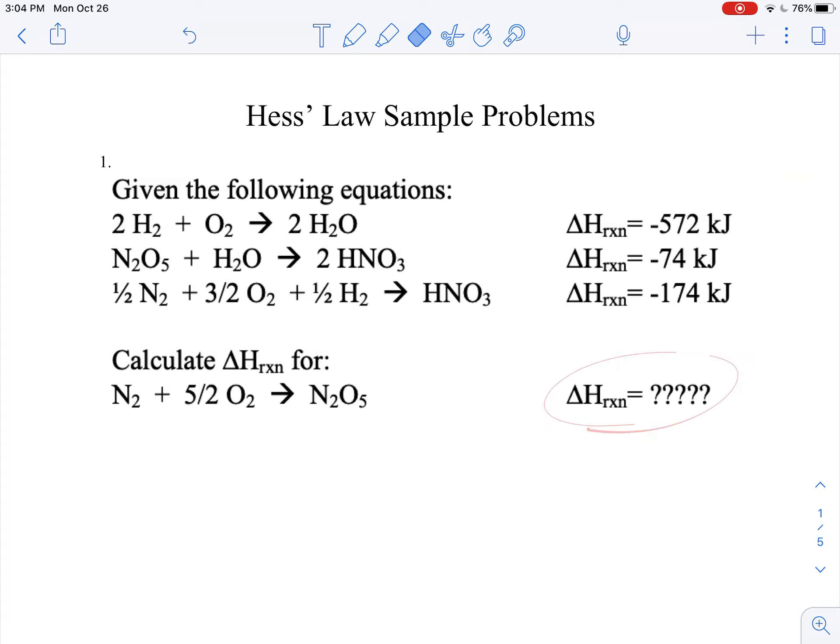But you want to make sure that you arrange your equations in such a way that some of the reactants and some of the products end up canceling each other out, so that you take a target equation here and you build this target equation from the individual given equations. And to do so, you're going to have to flip some of them. You're going to have to leave some of them the same.